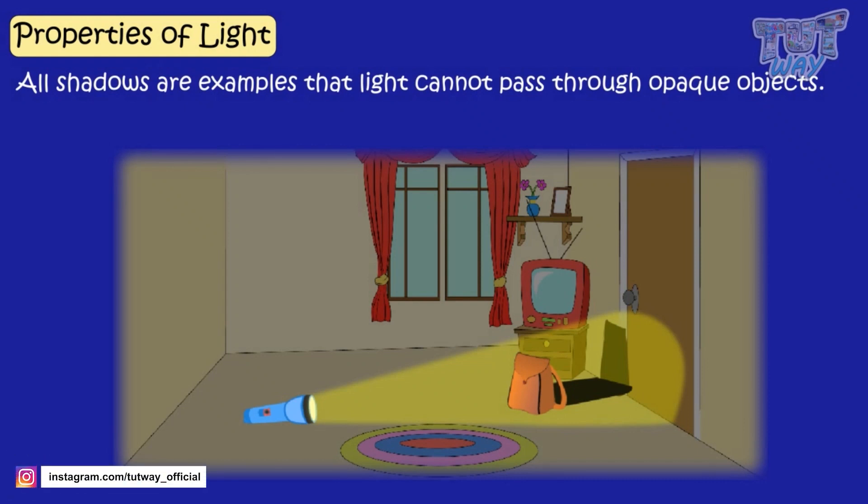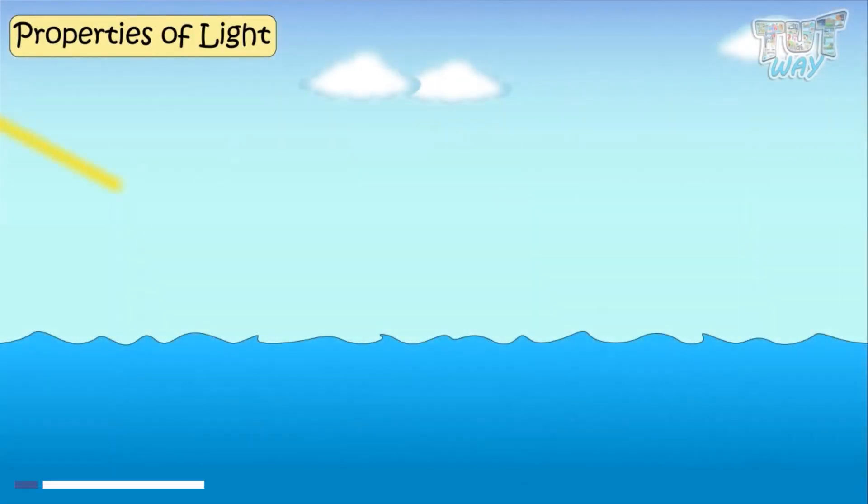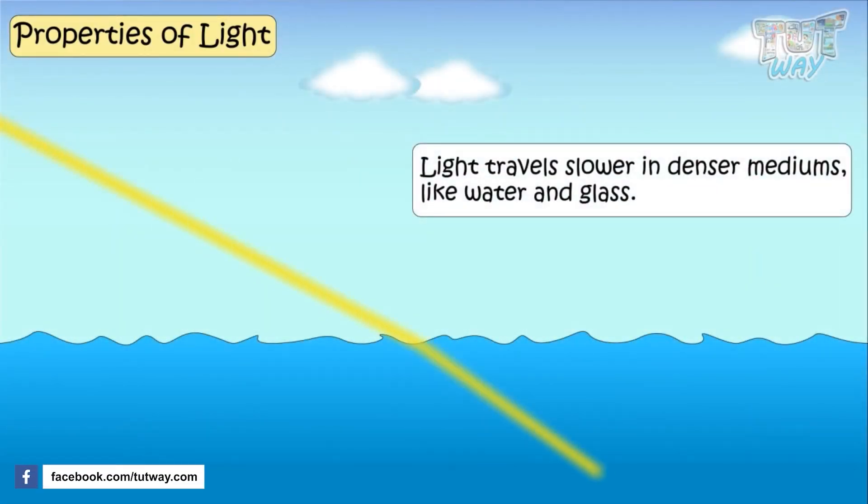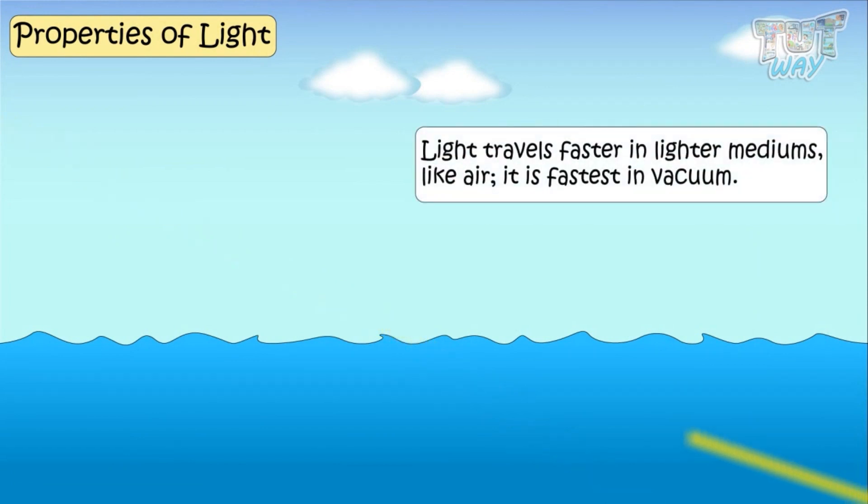Next thing we can learn about light is that light travels slower in denser mediums like water and glass. And light travels faster in lighter mediums, like air, and it is fastest in vacuum.